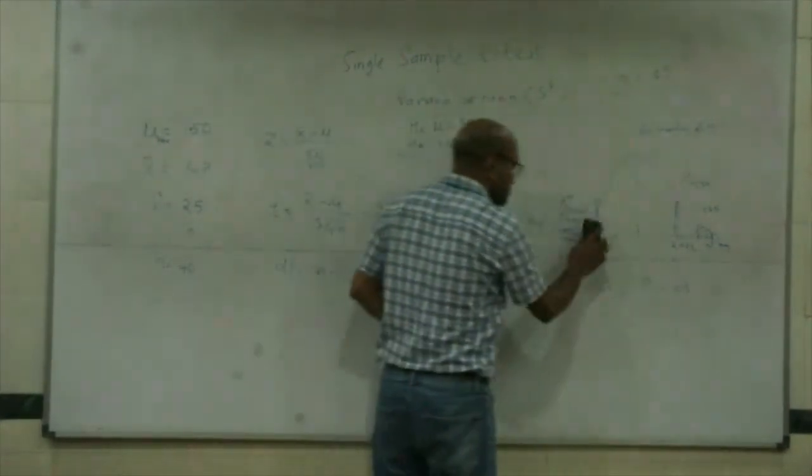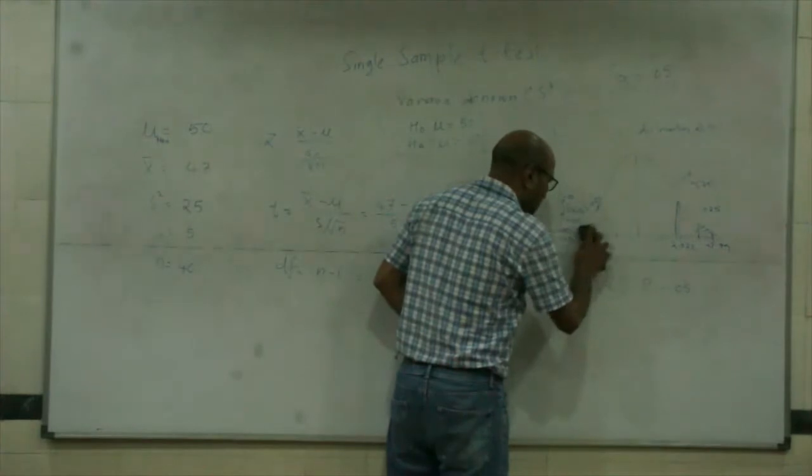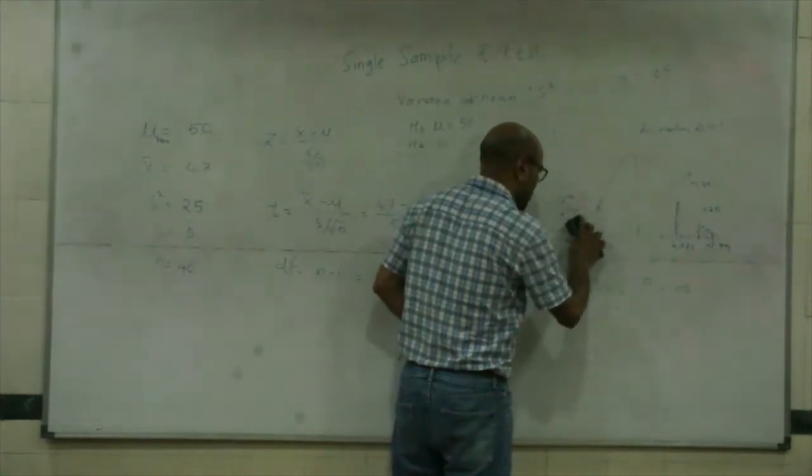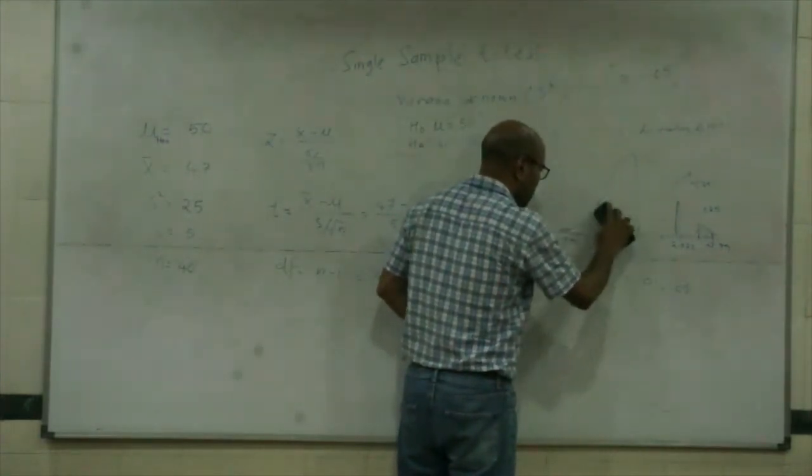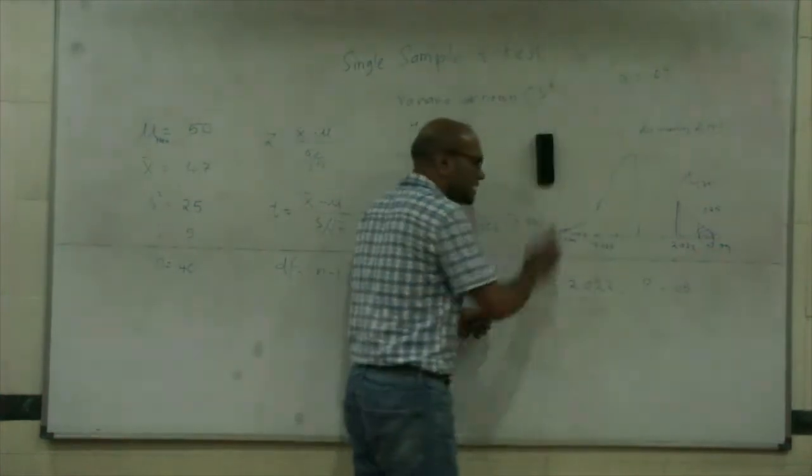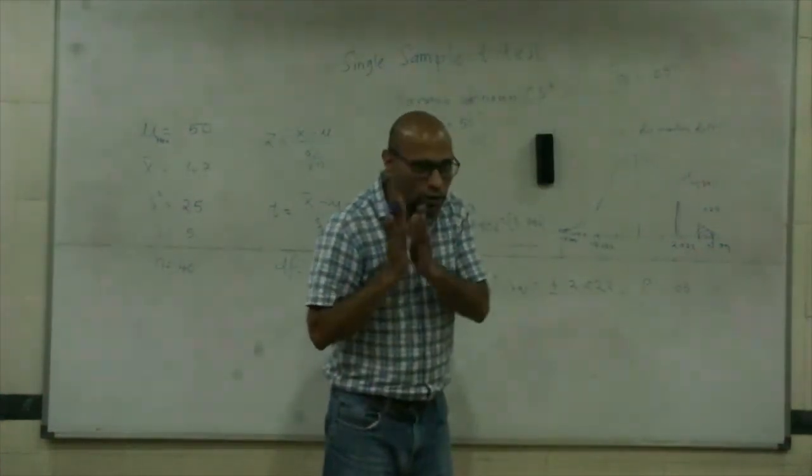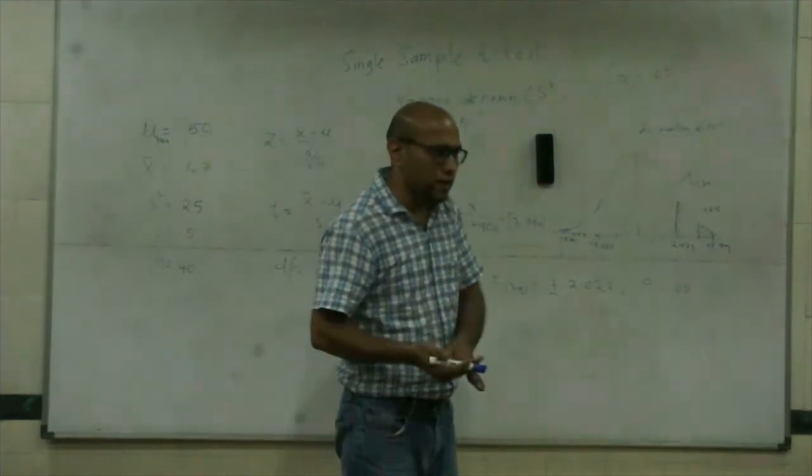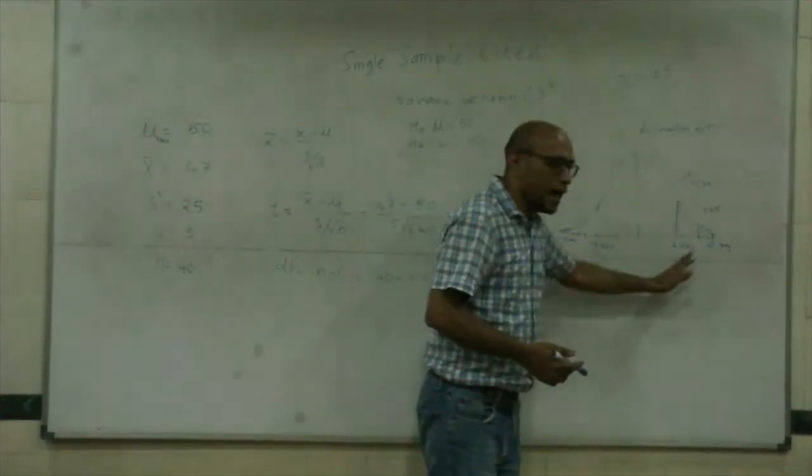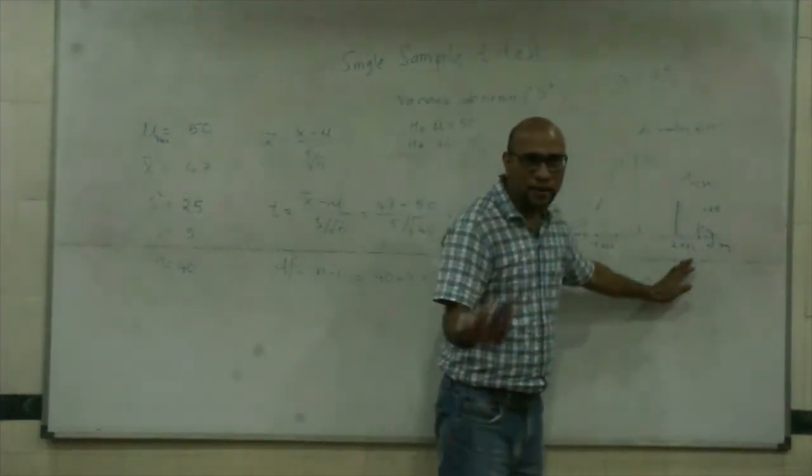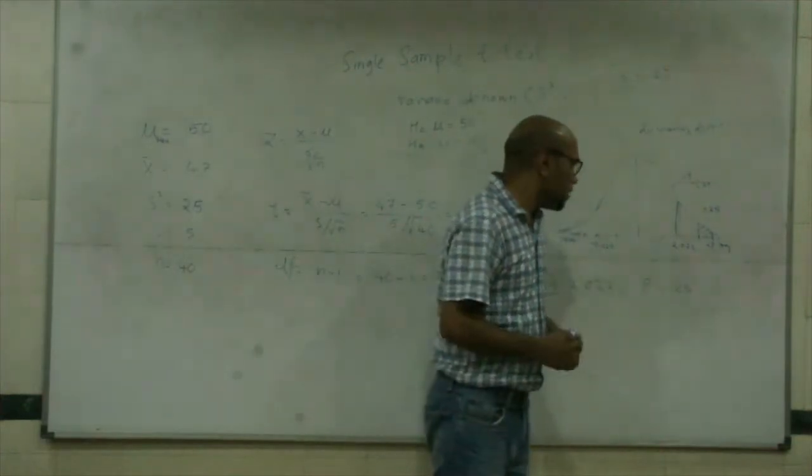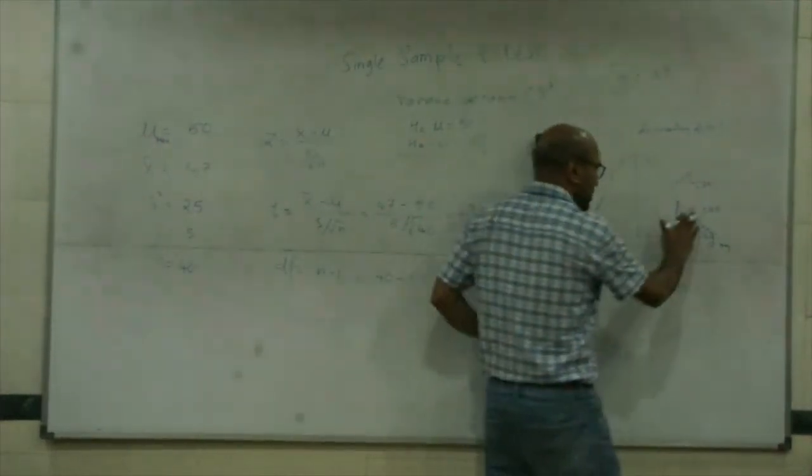Now when I am looking at only one side of x̄, then I would do what I am looking for. I would reject this null only if x̄ is higher than μ. So I am looking at integrating this area.